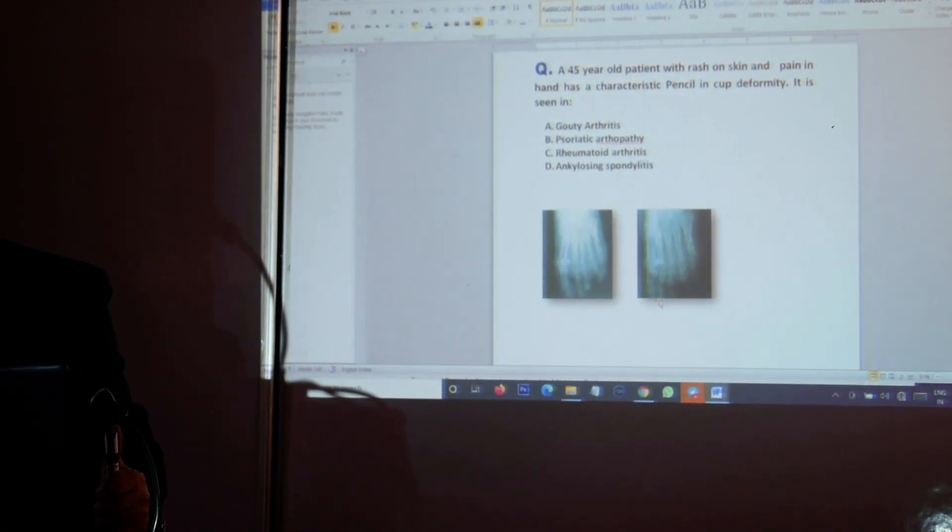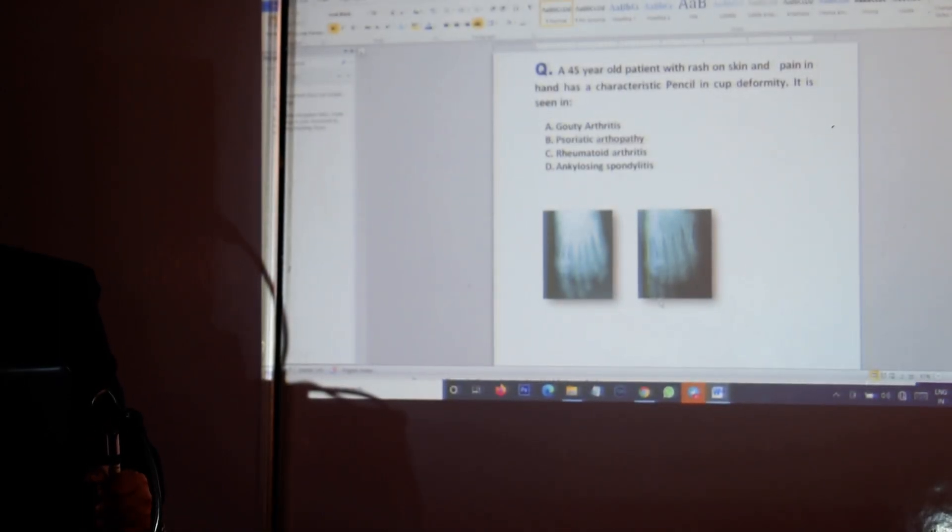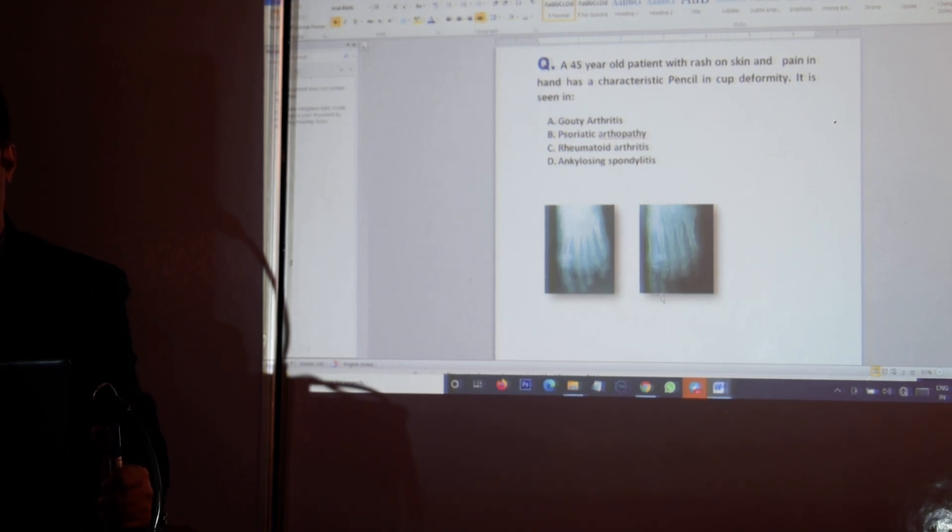Moving to the next question. Here we have a 45-year-old patient with a rash on skin and pain in hands has a characteristic pencil in cup deformity. I will not go to the options because my simple basic understanding of medical sciences, especially my knowledge of medicine and dermatology, would suggest pencil in cup deformity. This is a typical term which is used and this is usually associated with a dermatological condition known as psoriasis. Psoriasis is a dermatological condition in which we can have silvery scales on the skin especially on the extensor aspects of our limbs and body. The condition can be chronic and drugs used like calcipotriol, previously coal tar and new monoclonal antibodies, but I am not concerned about that fact. You have to recognize the radiological feature which is shown.